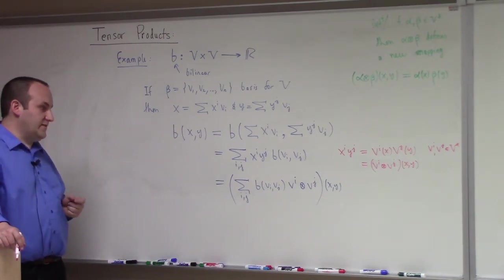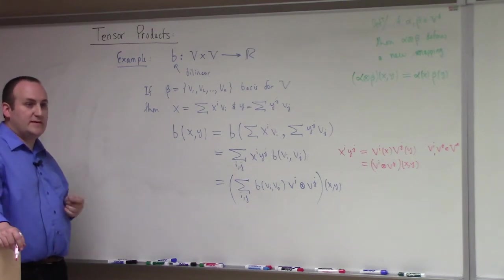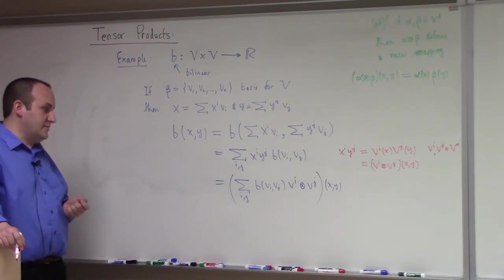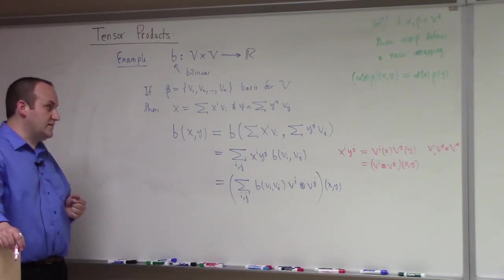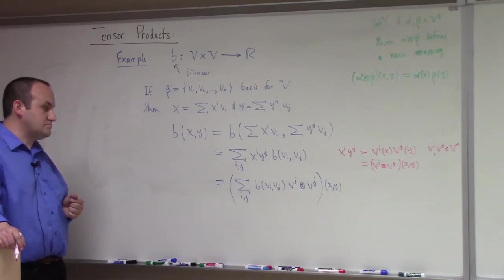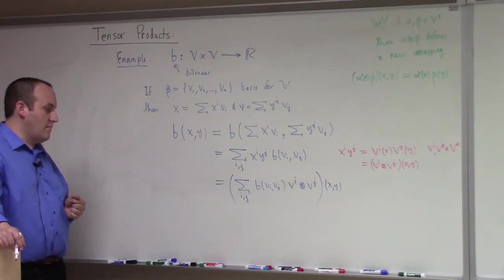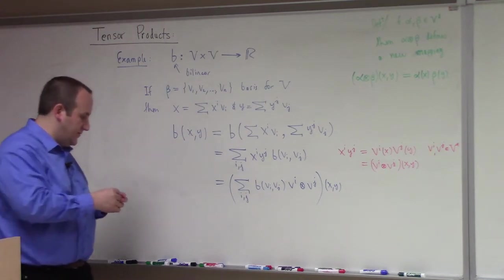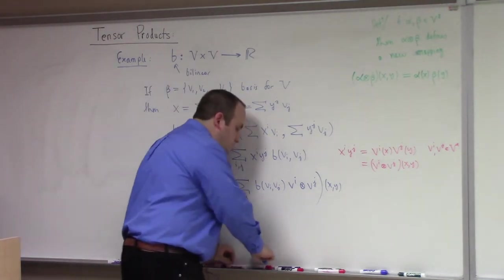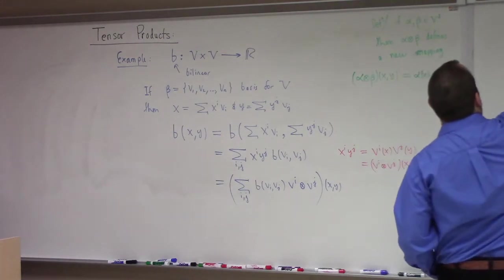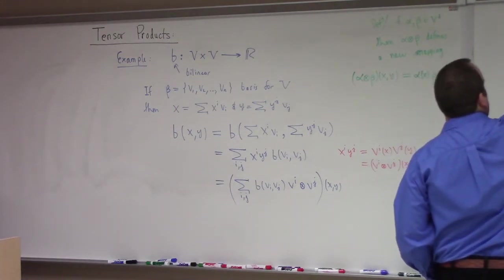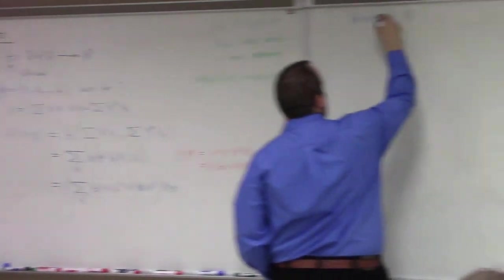So this is a concrete use of the tensor product. When people talk about tensor products, they're really talking about two different things: the world where we concretely build multilinear maps using tensor products of vectors and dual vectors, and the other place where people talk about tensor products at the level of spaces — taking the tensor product of two vector spaces. The abstract notion of a tensor product: you're given vector spaces, and this is still limited.